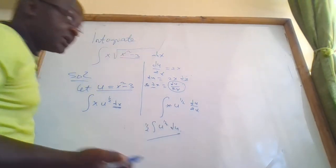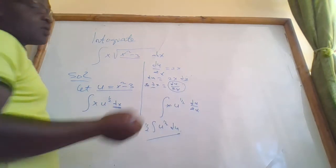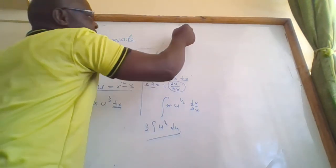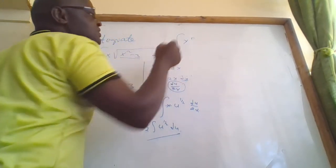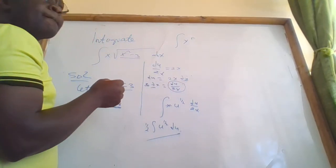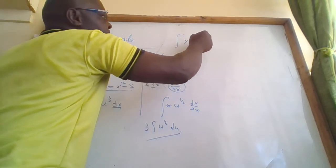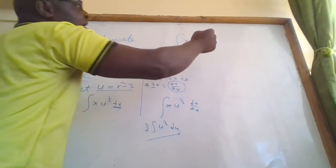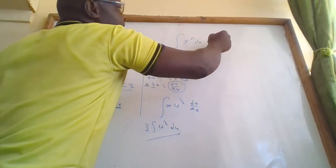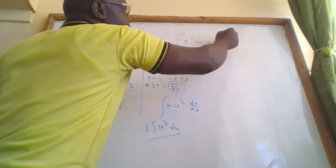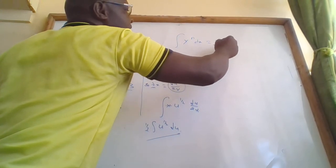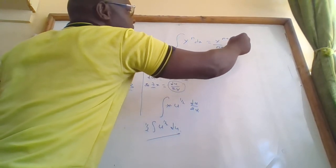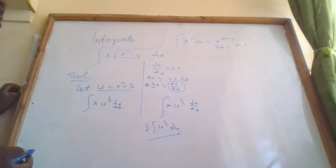From the integration formula we know that the integral of x raised to n dx equals x raised to n plus 1, over n plus 1, plus the constant of integration.